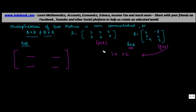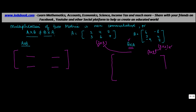Now when you consider B into A, the number of columns in the first matrix B equals the number of rows in the second matrix A. In such a case, the order of the resulting matrix will be 3×3.